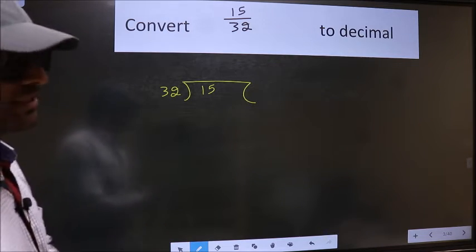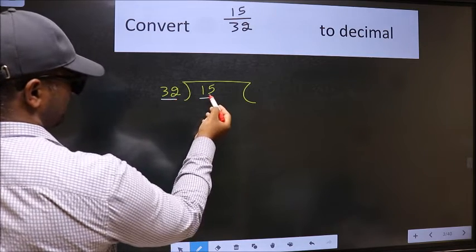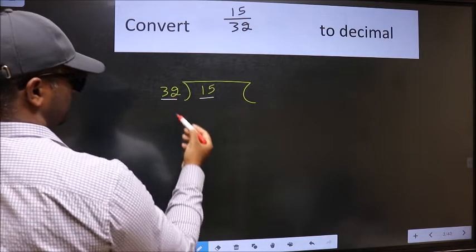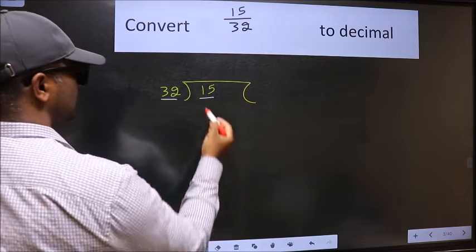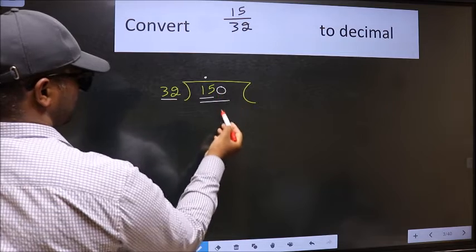Next. Here we have 15 and here 32. 15 is smaller than 32. So what we should do is we should put dot and take 0. So 150.